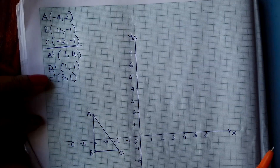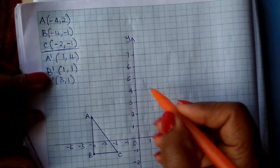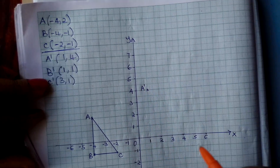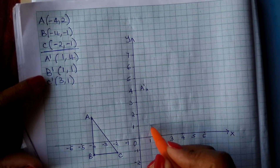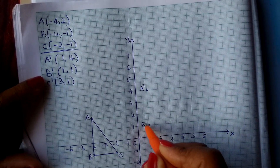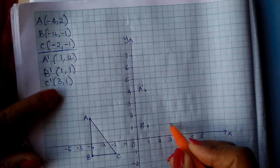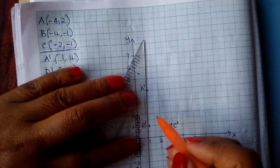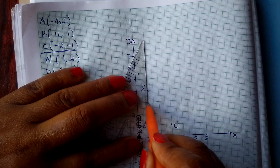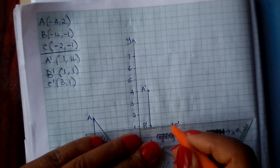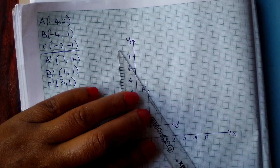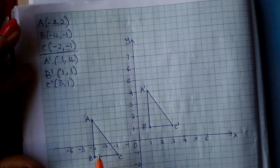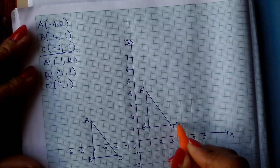Now let us draw its image. A' is at (1, 4) — label it correctly. B' is at (1, 1), here is your B'. C' is at (3, 1), there it is. Join the points — B' to C' and the others. Now we have the object and the image, well labeled.